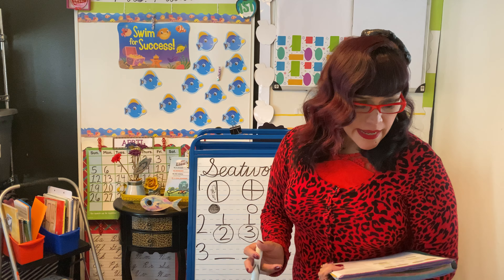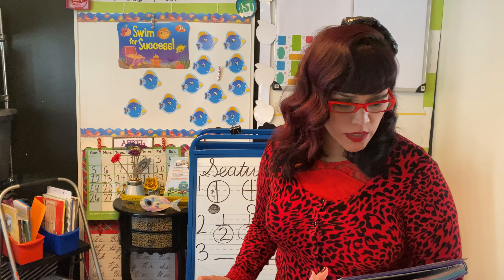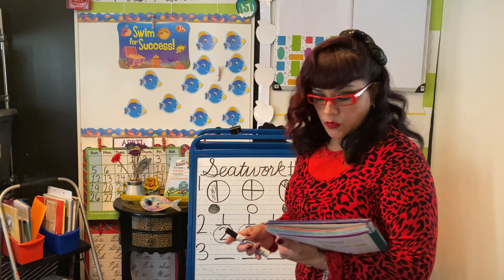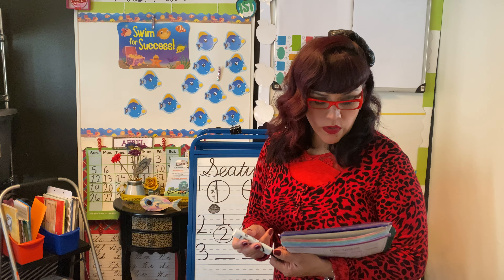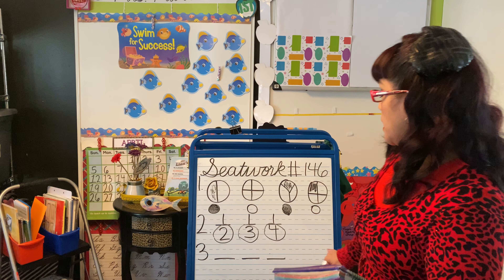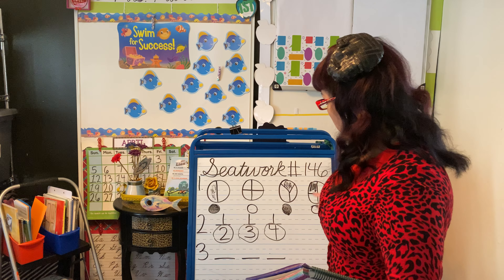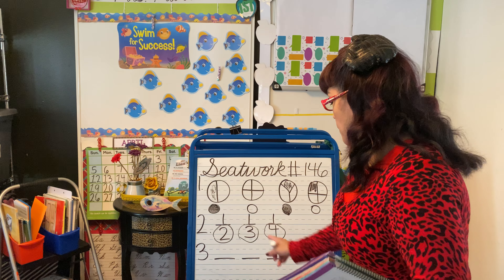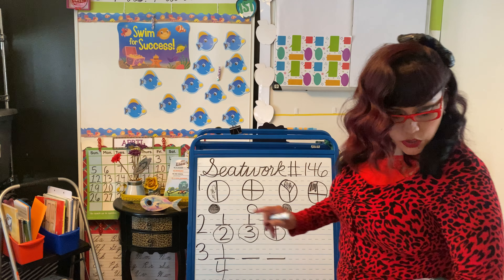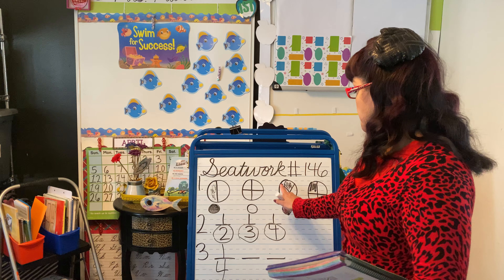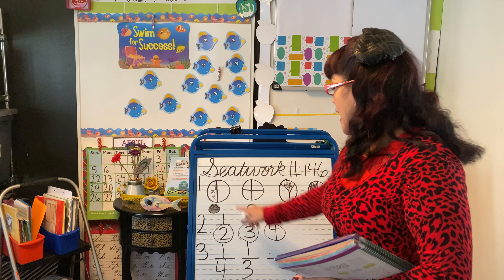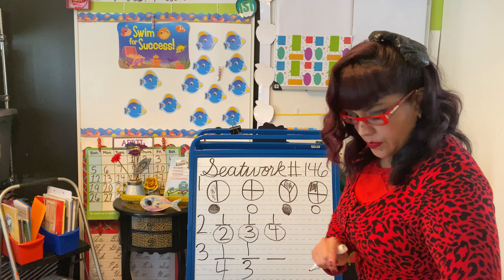All right, now for question number three, class, the directions say put one-half, one-fourth, and one-third in order from least to greatest. So let's go ahead and put these numbers from least to greatest. The first answer is going to be one-fourth — if we look at this circle, there are four pieces, so the pieces are getting smaller. Your next answer is going to be one-third. And then your largest piece is going to be one-half, and we can actually see that through the earlier example of the pies.